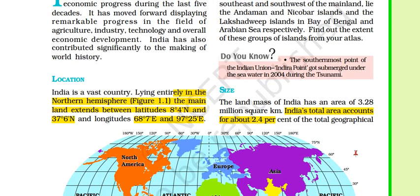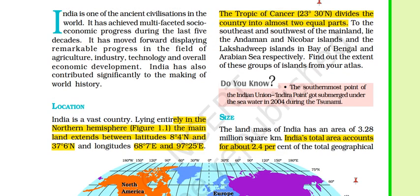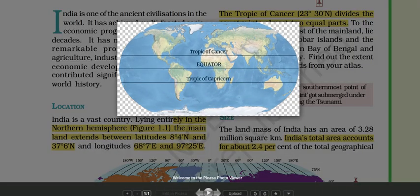Next we talk about the Tropic of Cancer, which actually divides the country into almost two equal parts. The Tropic of Cancer — the equator is the zero degree line, and north at 23 and a half degrees is the Tropic of Cancer. At the same latitude in the southern portion there is a line called the Tropic of Capricorn. The region between these two lines is called the equatorial region, also called the torrid region or tropical zone.